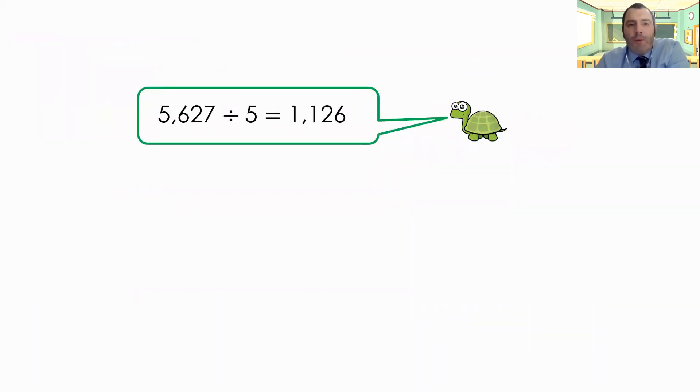So question for you. Is 5627 divided by five equal to 1126? No, it's not. Can you think why it isn't? Take a moment. Have a think about why it's not correct.